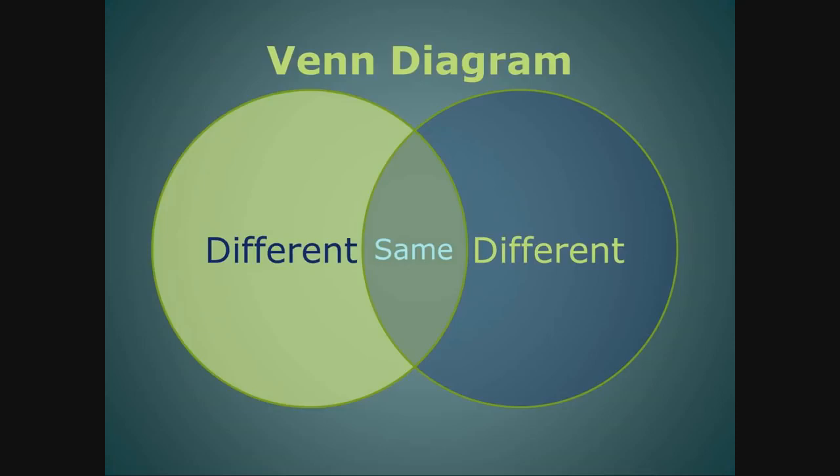When you contrast two things, you look for what is different. The differences in a Venn diagram are easy to see. Look for the parts of the circles with different colors.